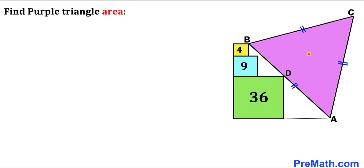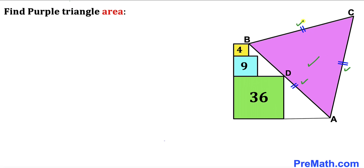Welcome to Pre-Math. In this video we have a purple triangle ABC leaning against given squares as shown in this diagram. The area of the green square is 36 square units, the area of the blue square is 9 square units, and the area of the yellow square is 4 square units. This purple triangle is an equilateral triangle since all its side lengths are equal. Our task is to calculate the area of this purple triangle.